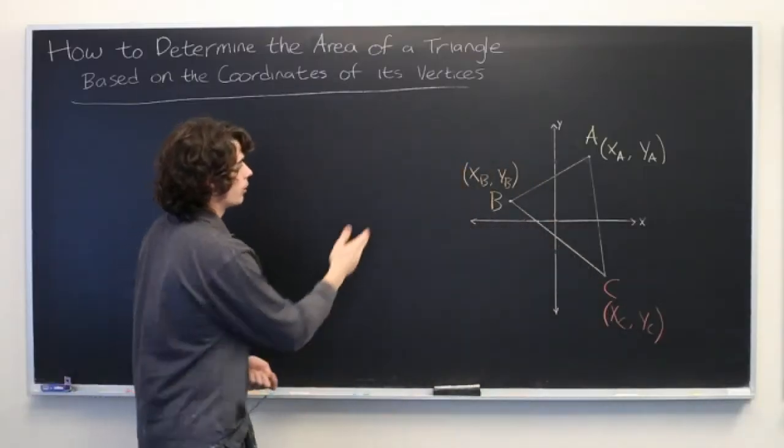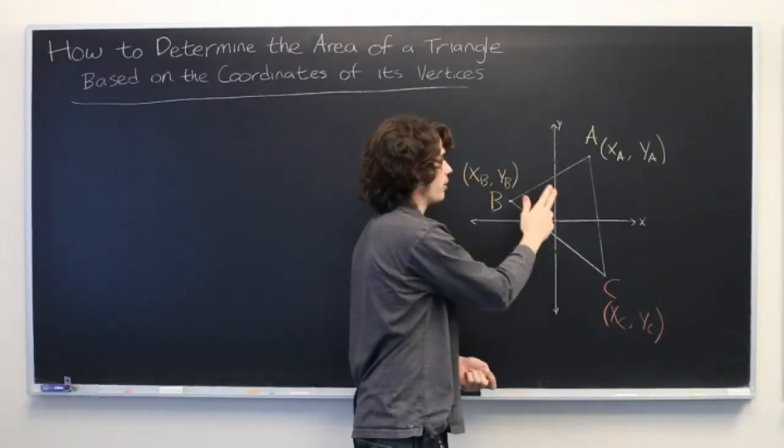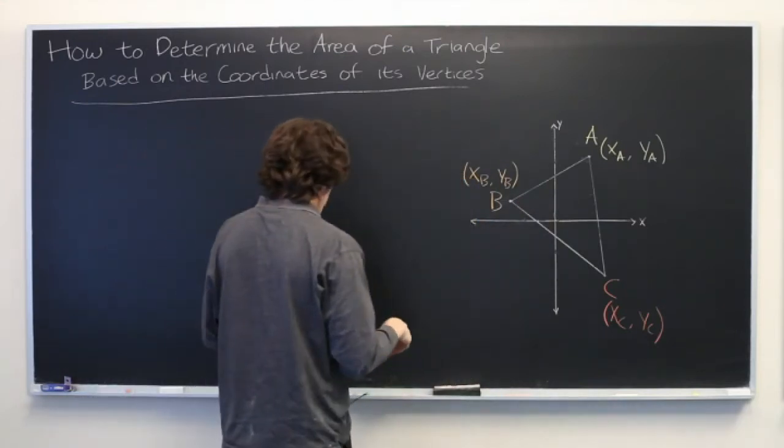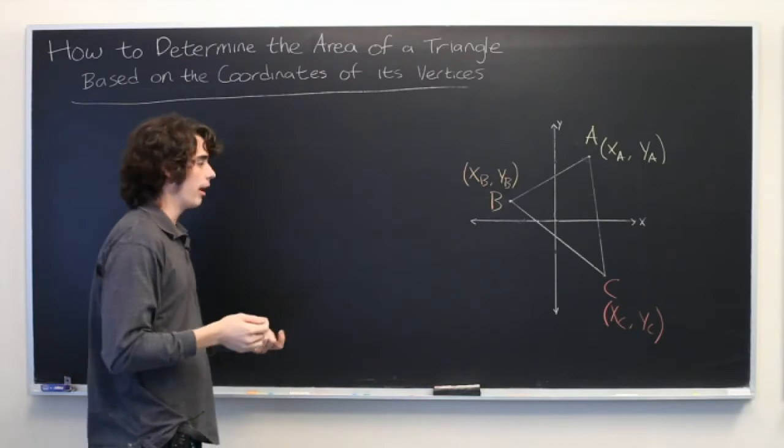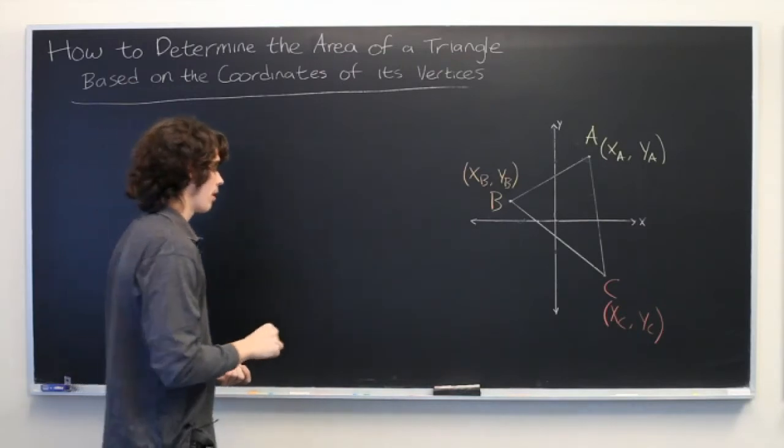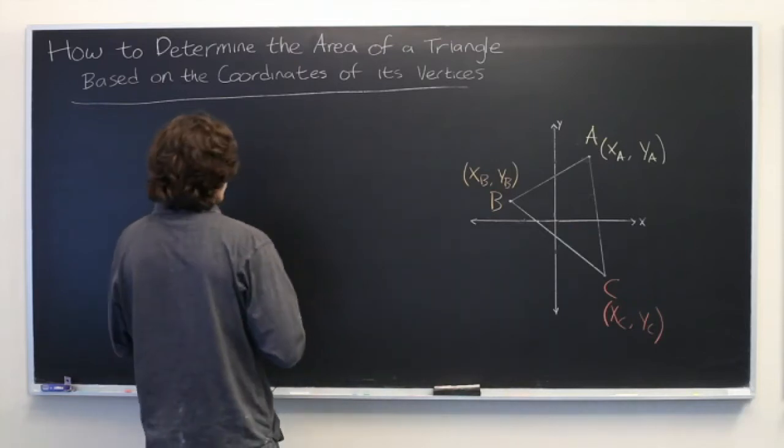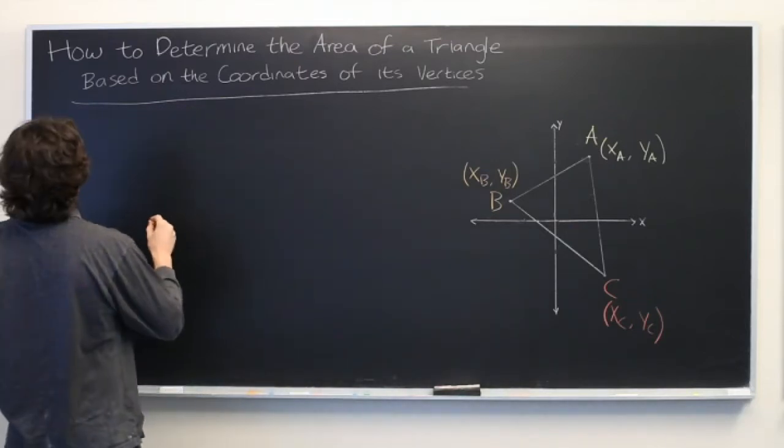Okay. So, if we know all of these values, we can determine the area of the triangle. Though the formula is a little bit complicated, it takes a while to set up, but it's not terribly difficult to calculate. So, we'll set it up piece by piece.